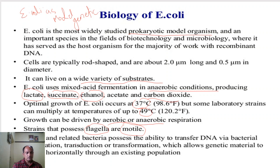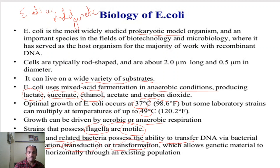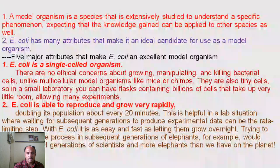E. coli and related bacteria possess the ability to transfer DNA via different genetic exchange mechanisms, which include conjugation, transduction, and transformation. These are the different mechanisms through which E. coli can exchange genetic material. A model organism is a species that is extensively studied to understand a specific phenomenon, with the expectation that knowledge gained can be applied to other species.